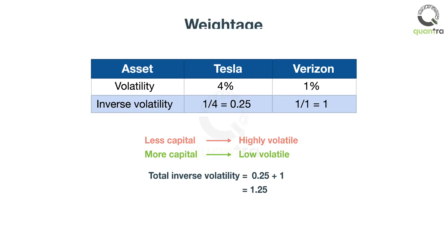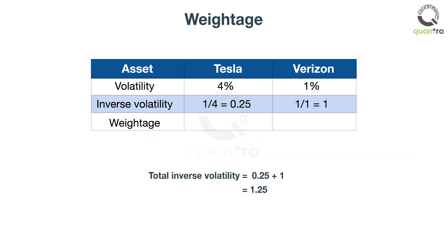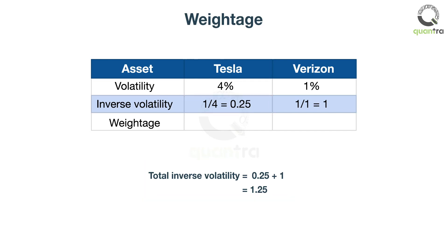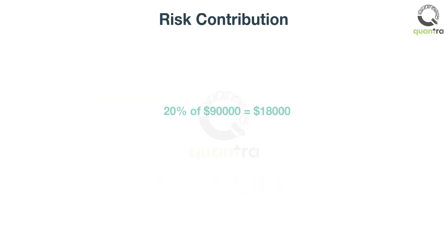He divided the inverse volatility of Tesla, which was 0.25, with the total inverse volatility of 1.25, to get the weight for Tesla as 20%. And similarly, the weight of Verizon came out as 80%. Of the $90,000, $18,000 is allocated to Tesla and $72,000 to Verizon.